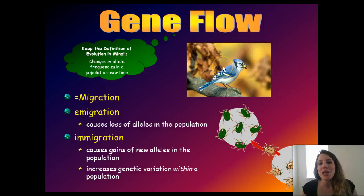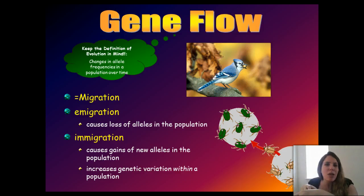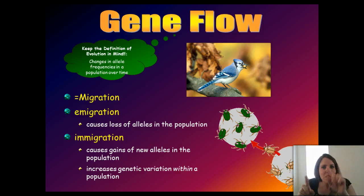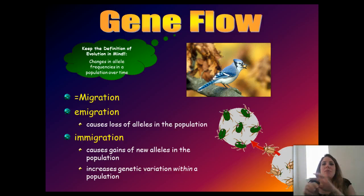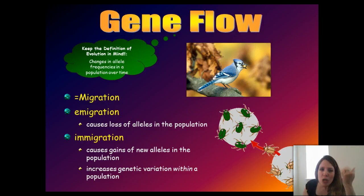Over the long run, if gene flow continues long enough, you actually start reducing genetic diversity between populations because you're shuffling the same genes back and forth. An example is blue jays that like to carry acorns — they've been documented taking acorns from one patch of oak trees and dropping them in another patch, where they grow into trees, and taking acorns from that patch back to the first. In terms of oak tree genetics, you're shuffling genes back and forth, and given enough time, you can actually make those two patches genetically identical to each other.